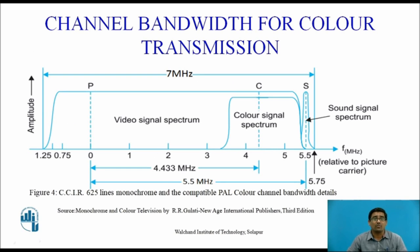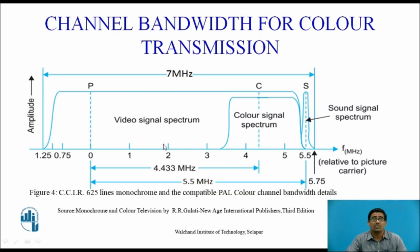This is the channel bandwidth for color transmission. A total 7 MHz channel is required, comprising the luma signal spectrum and the color signal spectrum. Out of the 7 MHz, 4.433 MHz is required for the luma signal spectrum plus half of the color signal spectrum. For the luma signal spectrum, color spectrum, sound carrier, color carrier, and picture carrier combined, 5.15 MHz is required.